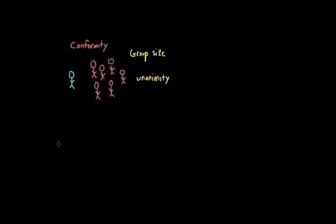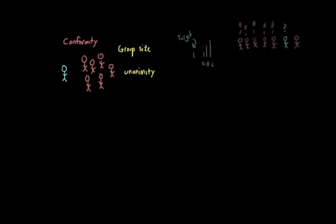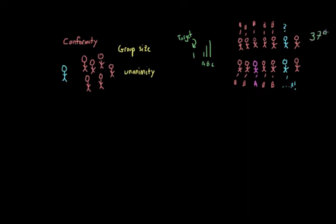As an example of this, in one variant of the Ash line study, the researchers changed the experiment such that the participant had a supporter, someone who gave the correct answer before it was the participant's turn to answer. And what they found was that even one defector can influence how likely an individual is to comply. So while in the original Ash study, 37% of participants fully complied or complied on every trial, total compliance dropped to only 5% when there was a supporter in the group.